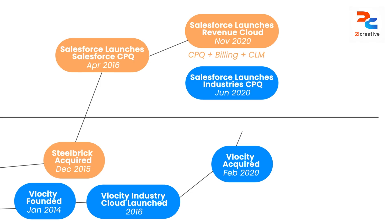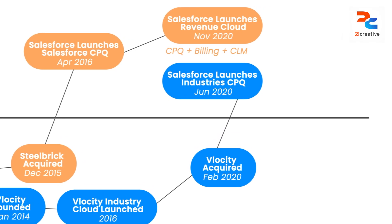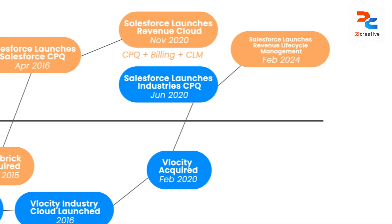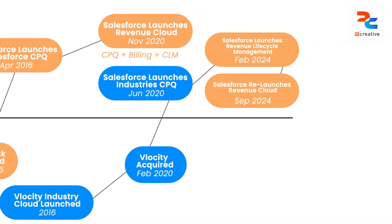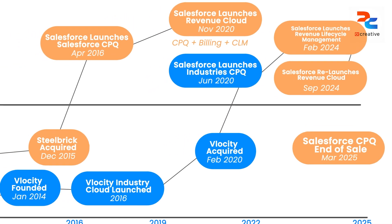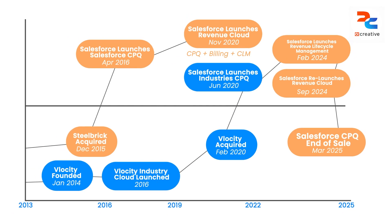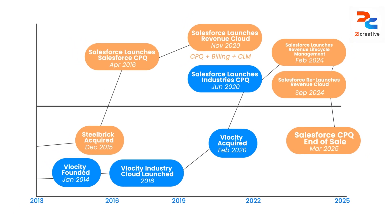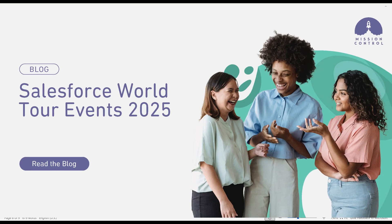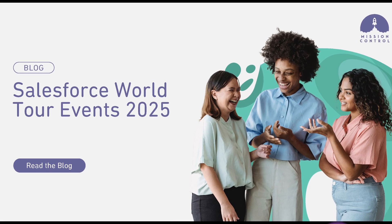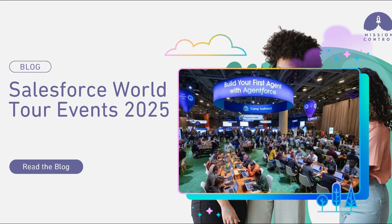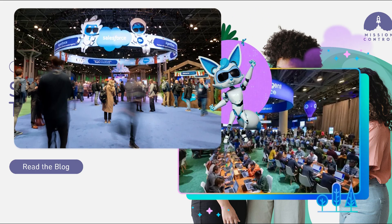Industry CPQ was very popular and was renamed in 2024 as Revenue Lifecycle Management, which is now known as RCA — Revenue Cloud Advance. One more thing to add: Salesforce CPQ is becoming end of sale already by March 2025, and everything is part of RCA. A lot of changes are happening — we were at the latest Salesforce World Tour event and everyone was talking about RCA. That's the behind-the-scenes story of how Revenue Cloud has evolved over the years.